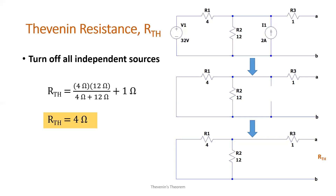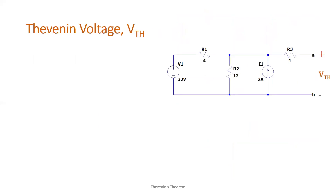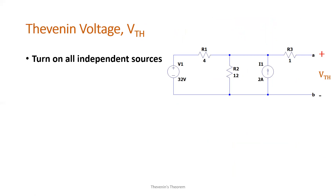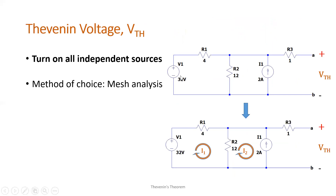Now let's move on to the Thevenin voltage. The Thevenin voltage is the open circuit voltage at points A and B. First, we need to turn on all independent sources. The method of choice I want to use in solving for the Thevenin voltage is mesh analysis. You can use other methods you've already learned, but mesh analysis is easier here. Since the circuit is open at points A and B, current will not flow at that loop, so we only have two meshes.